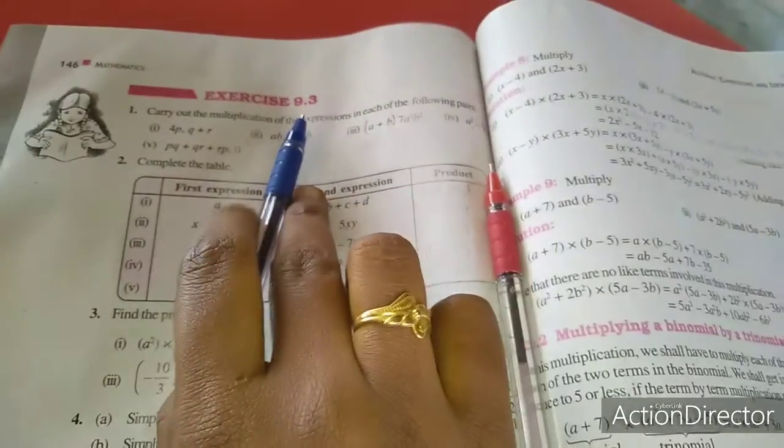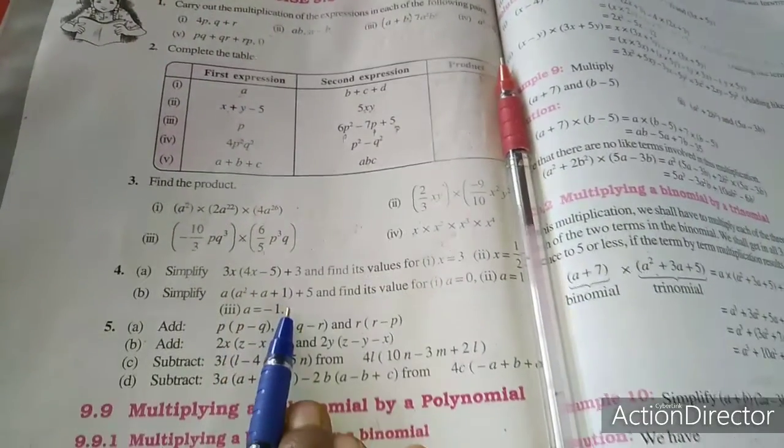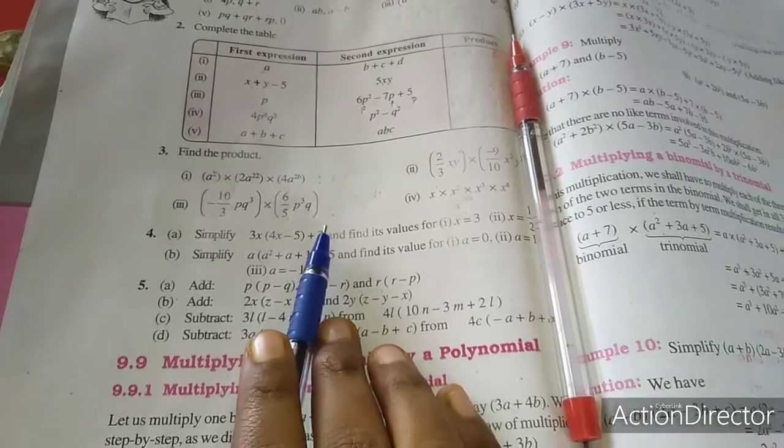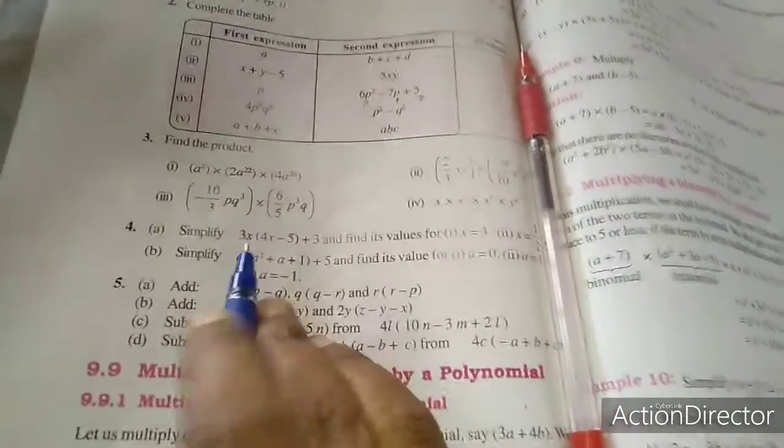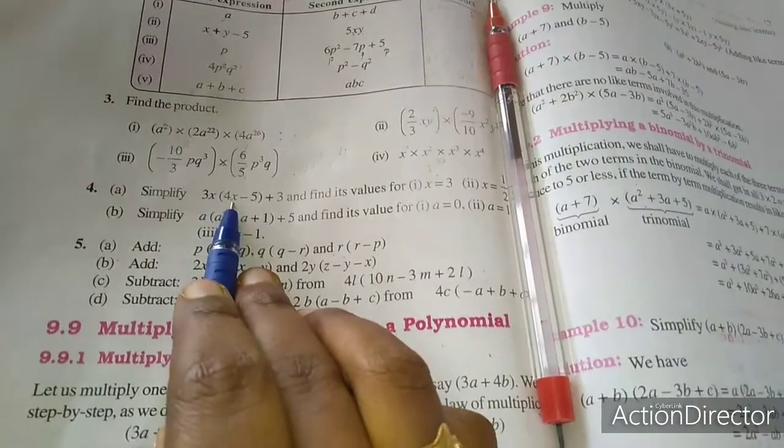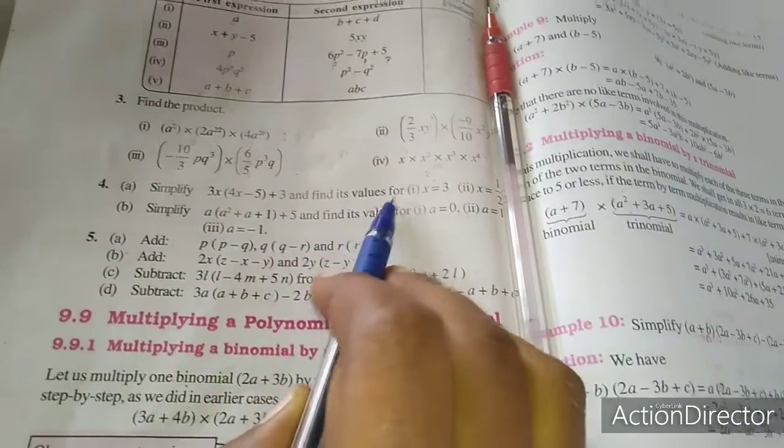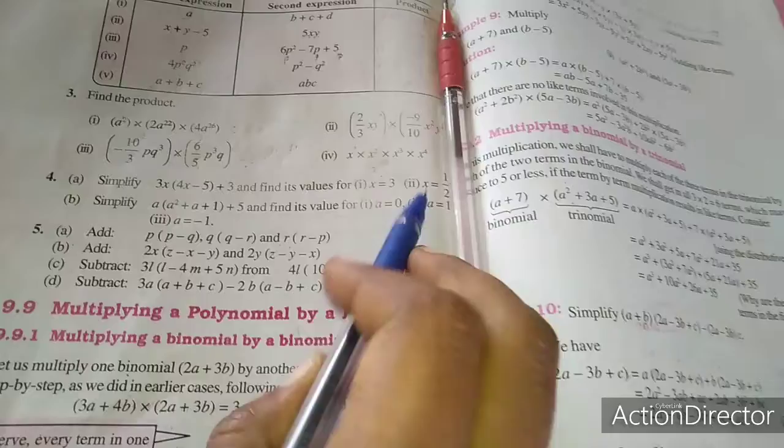In last class we completed exercise 9.2 up to 3 sums. Now we will move to the 4th sum. 4th and 5th I will do completely. Just listen here. The 4th sum is: simplify 3x(4x - 5) + 3 and find its value for x equal to 3 and x equal to 1/2.